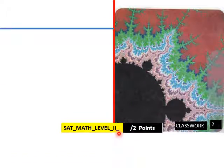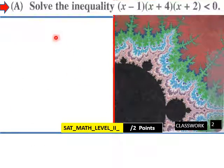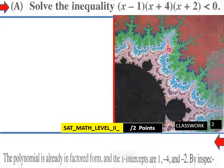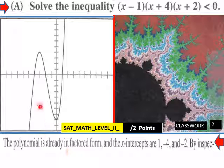So let's get into an example. A: Solve the inequality (x - 1)(x + 4)(x + 2) < 0. So here is the graph of this. The polynomial is already in factored form and the x-intercepts are 1, negative 4, and negative 2. So we get negative 4, negative 2, and then 1.